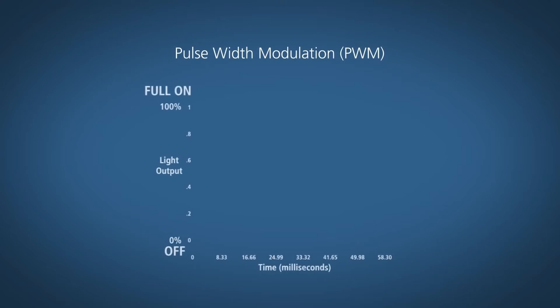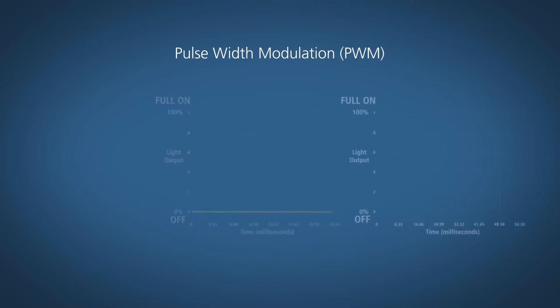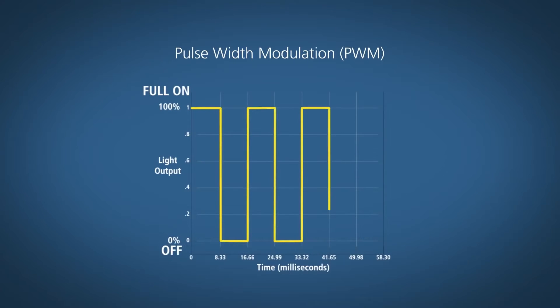PWM dims differently. PWM is similar to a garden hose that can only flow full on or full off. Imagine you have a kink in the garden hose that either stops the flow of water or allows it to come on fully. As you pulse that kink on and off, you adjust the flow of water through the hose.